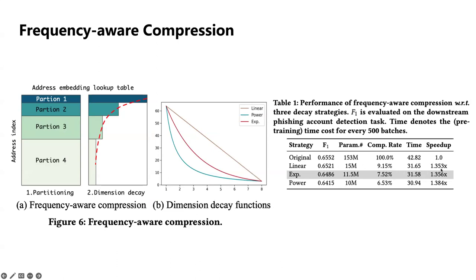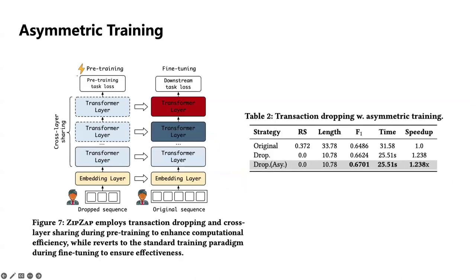Another strategy is asymmetric training. We drop the majority of transactions in the sequence during pre-training because we observe there are repetitive transactions in the sequence that share the same address features. Because pre-training tasks mainly focus on capturing relationships between addresses, reducing repetitive transactions won't bring performance drops.